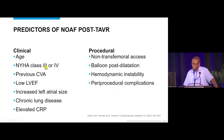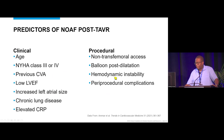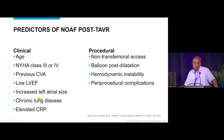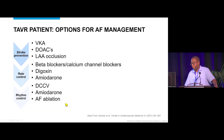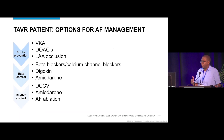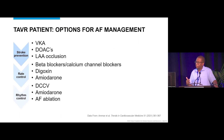The clinical and procedural predictors of new-onset atrial fibrillation following TAVR include: older age, sicker patients, comorbidities, low ejection fraction, hemodynamic instability during TAVR, and procedural complications such as pericardial effusion requiring pericardiocentesis.